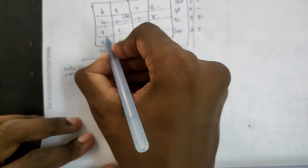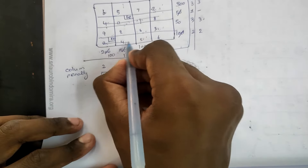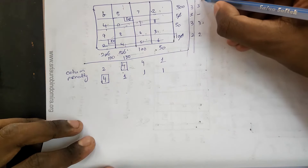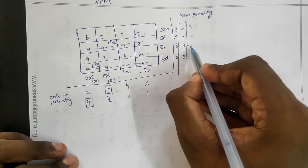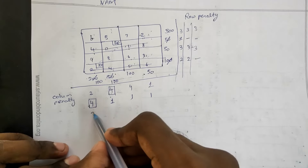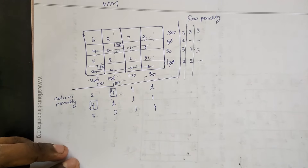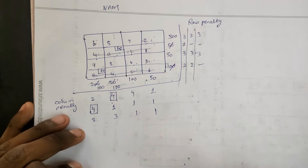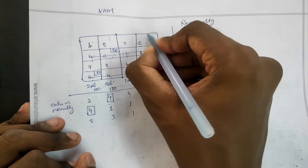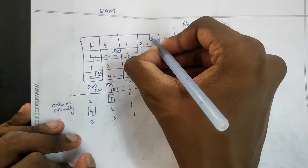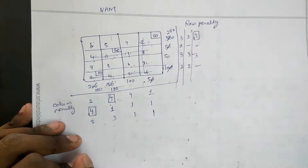Now the third step. 5 minus 2 means 3, which equals 6 minus 3 means 3. 9 minus 6 means 3. 6 minus 7 means 1. 3 minus 2 means 1. In this third row, there are 4 and 3. I will add 3, then add 2. I will allocate 2. I will add 50, then 250. I will add it full. This is the 3rd step.